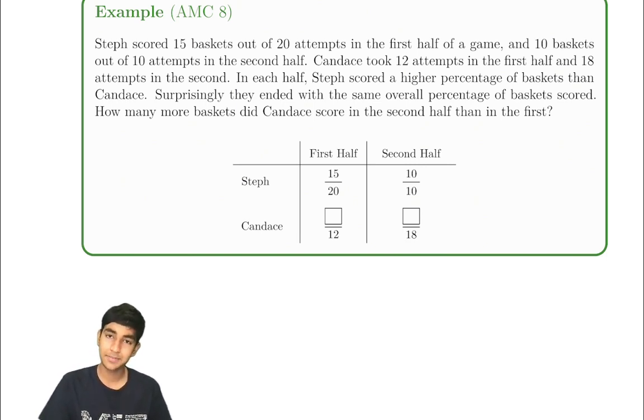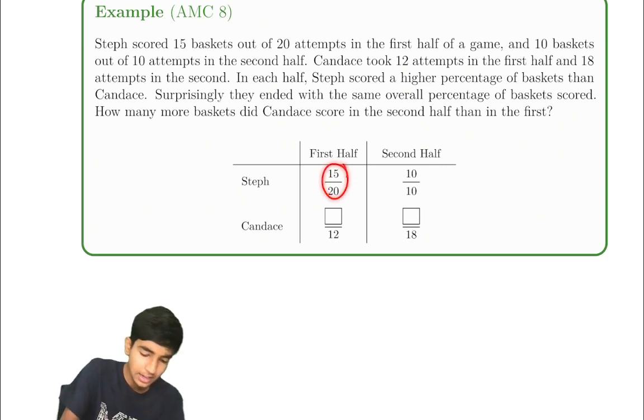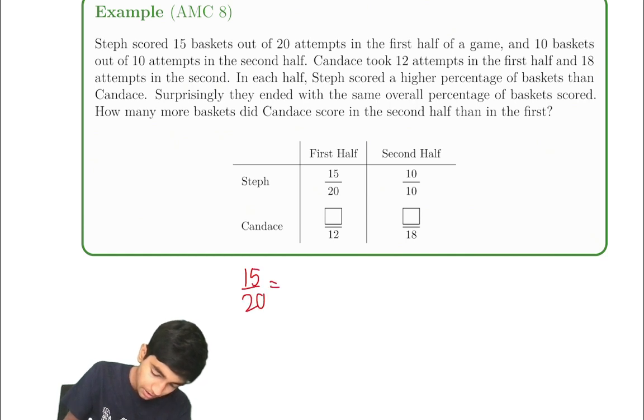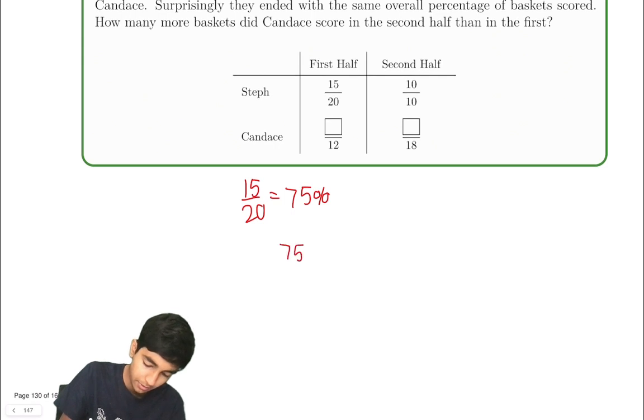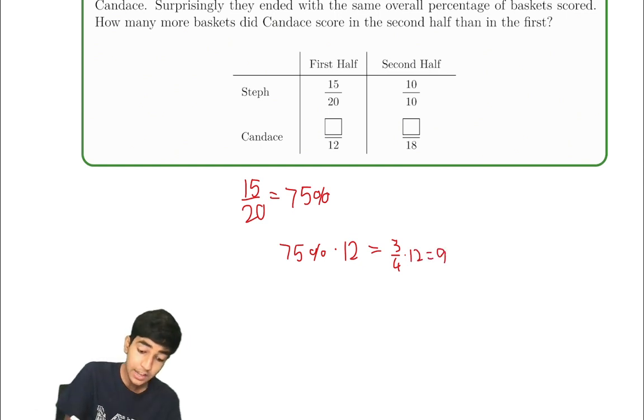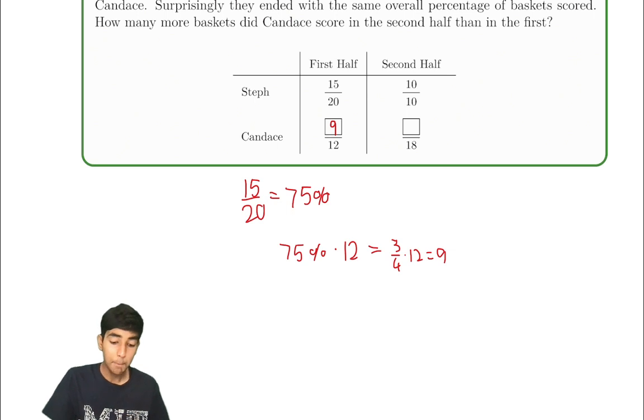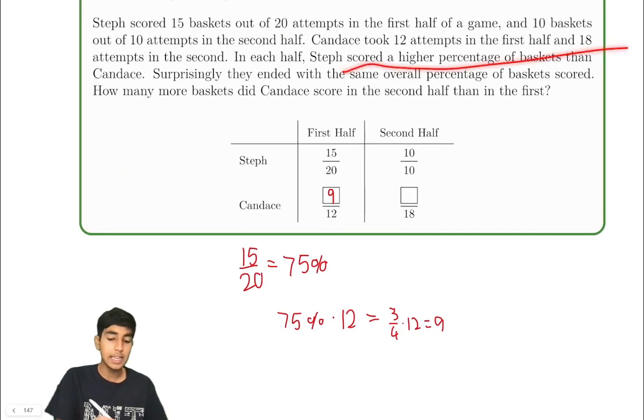This is interesting. So Steph is 15 out of 20, which is 75%. So Candice must be less than 75%. It has to be less than 75% or it won't satisfy the condition. So what is 75% of Candice's attempts? 12. 75% is 3 fourths. So that's nine. So if Candice were to make nine out of 12, that would be 75%. But Steph scored a higher percentage in each half. So it has to be less than nine.